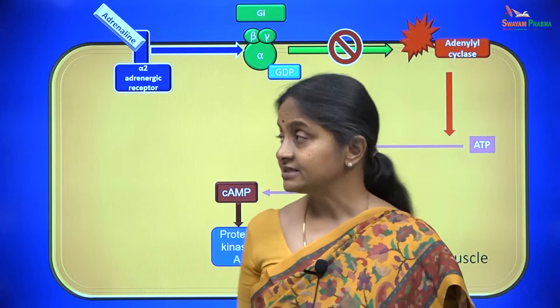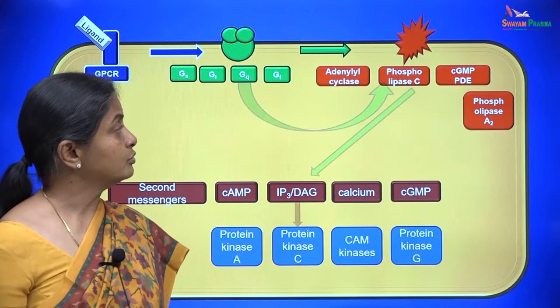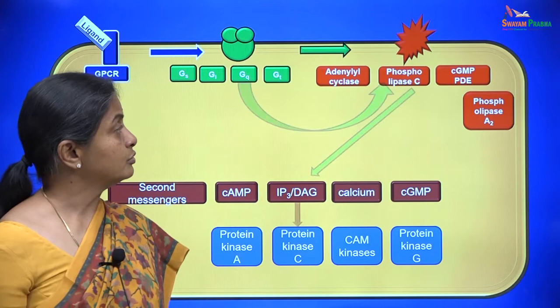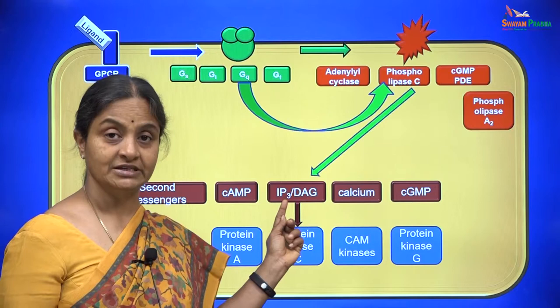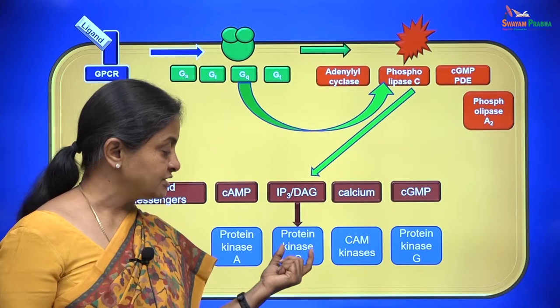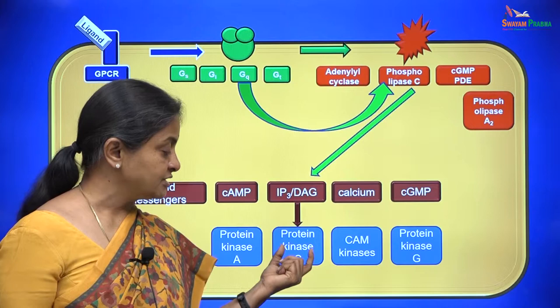The next G-protein we will consider is the Gq subtype. The Gq subtype of G-protein activates the membrane enzyme phospholipase C, which increases the levels of inositol triphosphate in the cytoplasm and diacylglycerol. Ultimately, protein kinase C is activated.